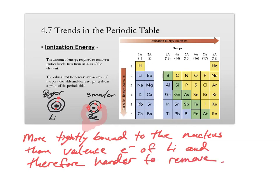Now going down a group, the atoms are getting bigger, so the electrons are further away from the nucleus, and therefore less strongly or tightly bound to the nucleus, and therefore easier to remove. So, the ionization energy decreases.